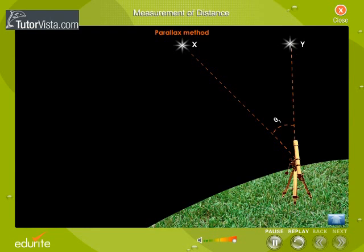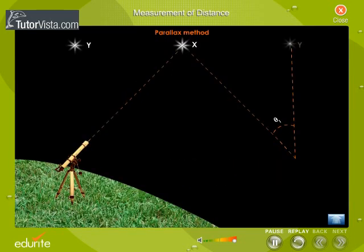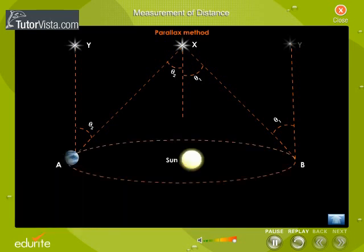After 6 months, when the Earth reaches a diametrically opposite side, measure the parallax angle between the stars X and Y. This geometrical figure shows the positions of the stars as observed from Earth. The total angle subtended by the star X on the Earth's orbital diameter is equal to theta 1 plus theta 2.